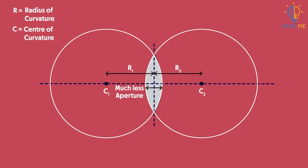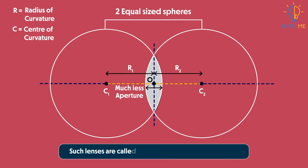two centers of curvature are equidistant from the optical center O, which also means that they are made from two equal sized spheres. Such lenses are called thin lenses with small apertures.